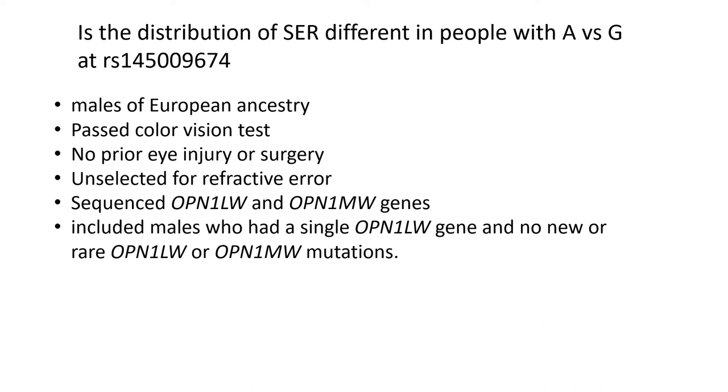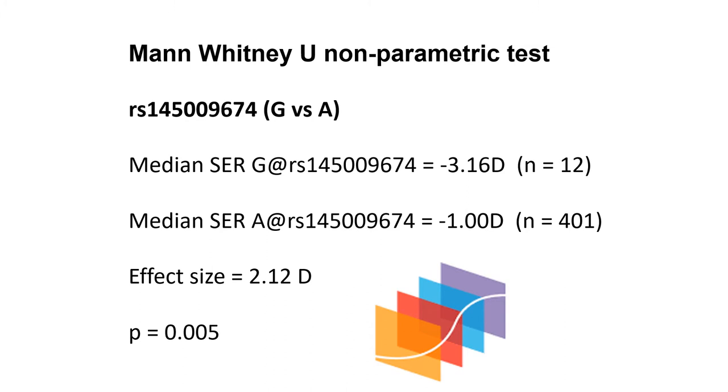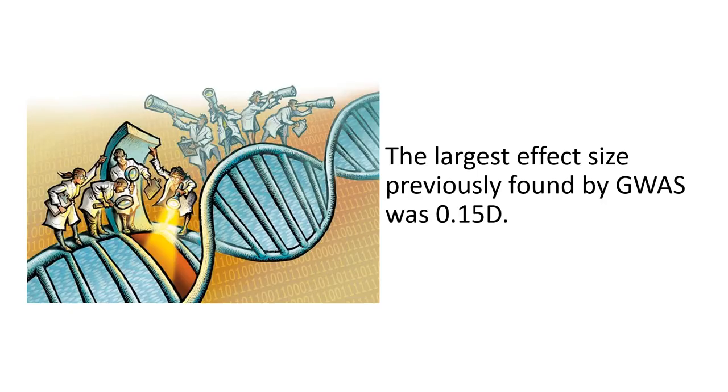We did this by looking at human subjects and we had a variety of inclusion and exclusion criteria. Notably they all had to have normal color vision, and they were unselected for refractive error. We sequenced their L and M opsin genes, and then in the final analysis we only included males who had a single L opsin gene and who had no new or rare L or M opsin gene sequences. We performed a Mann-Whitney U nonparametric test and found an effect size of 2.12 diopters. That is, the median spherical equivalent refraction for people with G versus A at this codon 178 polymorphism differed by 2.12 diopters, and this was highly statistically significant with a p-value of 0.005.